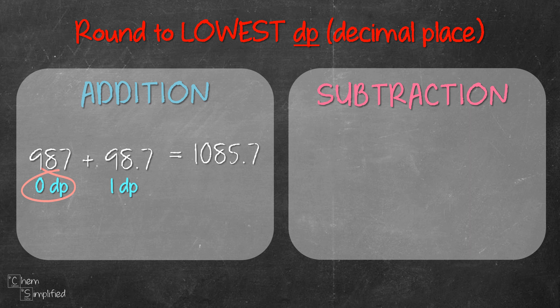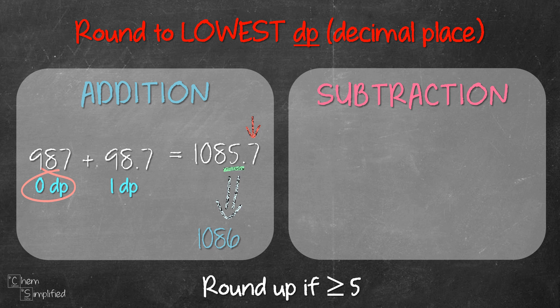We need to round it off so that we get zero decimal places, so we look at the digit to the right of 5, which is 7. When rounding, if the number is 5 or greater, we need to round up. In our case we have 7, so we round up and that gives us 1086. We add 1 to 1085 and remove everything after the decimal point, so we get our answer in zero decimal places.